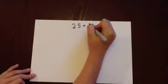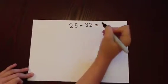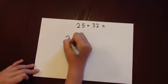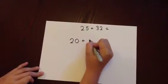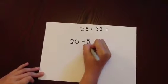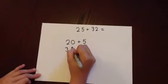We begin by partitioning each number into tens and units and writing it clearly. 25 becomes 20 add 5, and written underneath in clear columns. 30 add 2.